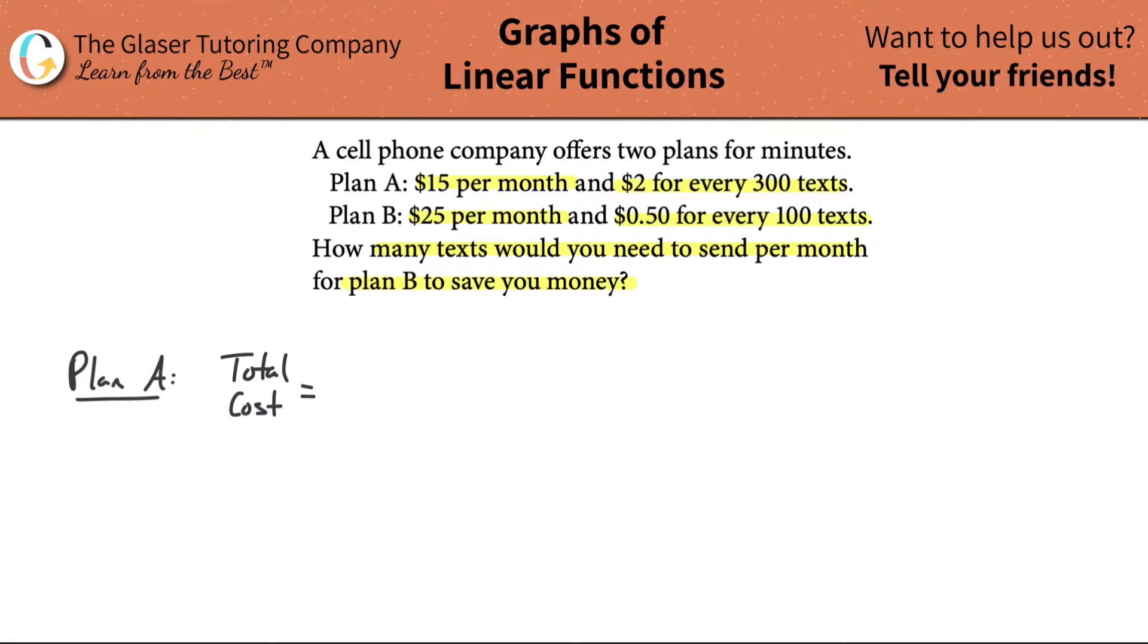So total cost will equal $15 per month multiplied by the number of months. And then add to that the total cost, which is $2 for every 300 texts. Now, anytime they do something like this, two dollars for every 300 texts, you got to break this down into a value per text. The reason is because the question is asking how many texts, so I need to find variables per text.